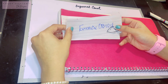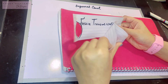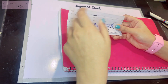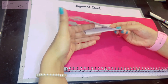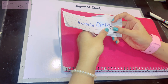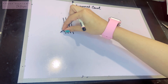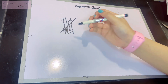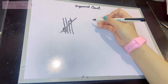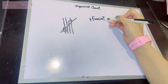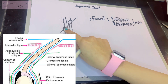The structures of the inguinal canal have various coverings derived from the muscle layers. As the contents traverse through the canal, they take with them the coverings of the anterior abdominal wall in the form of their fascias. The first covering acquired is from the fascia transversalis, and this covering is known as the internal spermatic fascia.